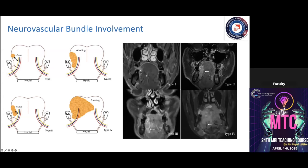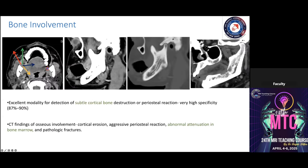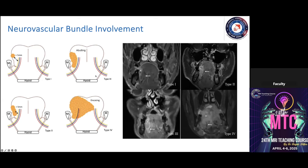When tumor thickness is large, it may abut or encase the neurovascular bundles on either side of the tongue. We can identify the lingual artery by its flow void. Abutment is classified as Grade 3; encasement is Grade 4. When Grade 4 is present, the tumor has usually crossed the midline, and these patients are typically candidates for palliative care only.